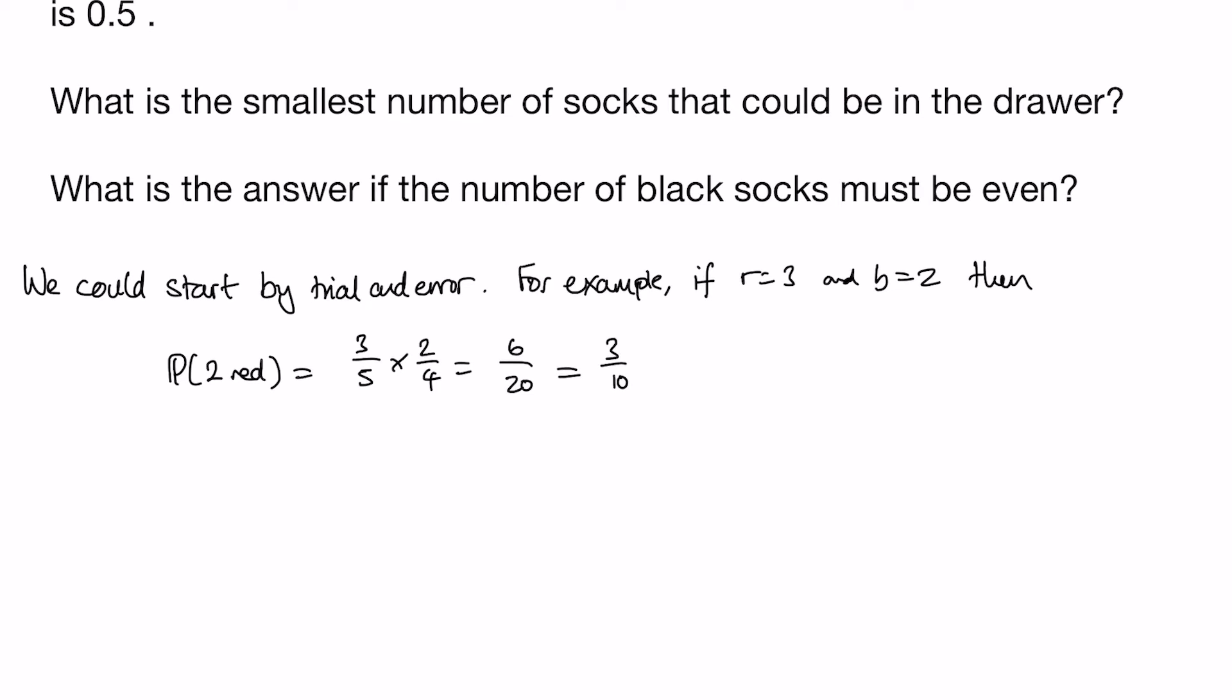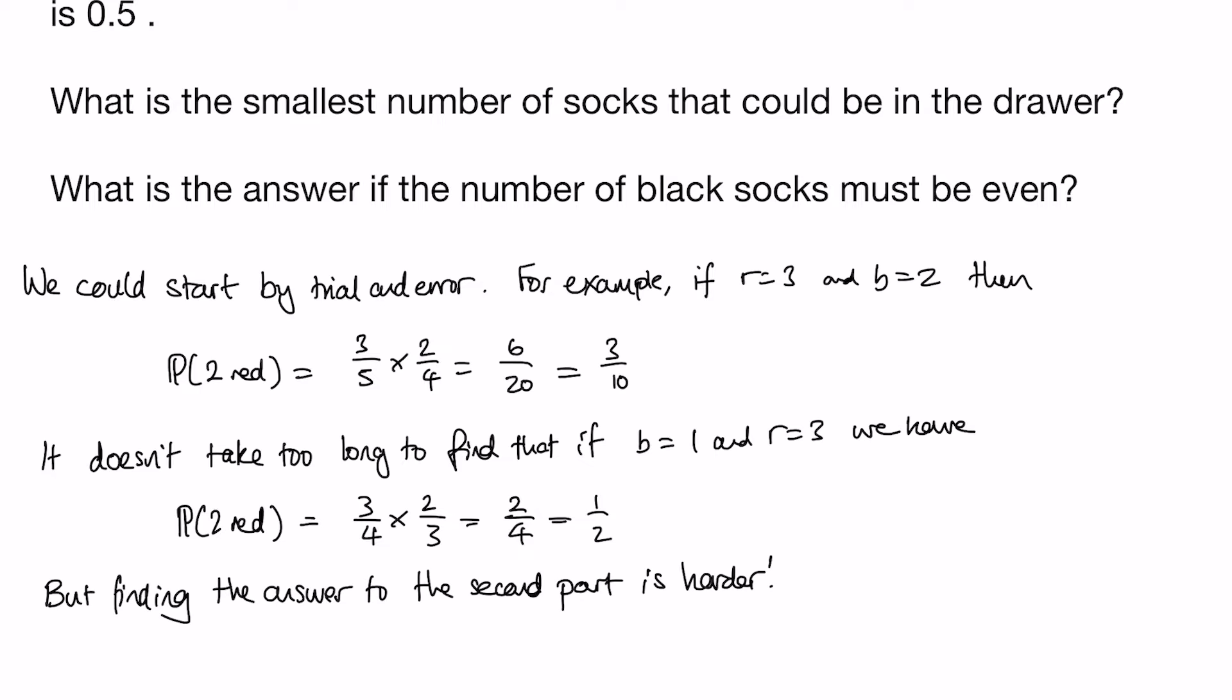It doesn't take too long to find that if the number of black socks is 1 and the number of red socks is 3, then the probability of 2 red is 3/4 × 2/3, which is 2/4 or 1/2. So we get the answer quite quickly by trial and error, but finding the answer to the second part is a lot harder.